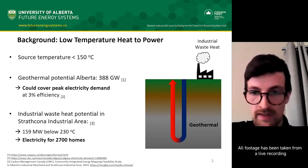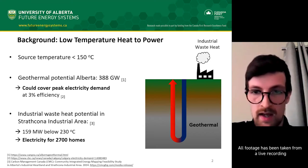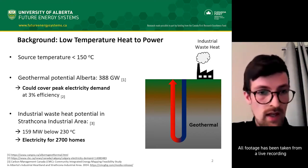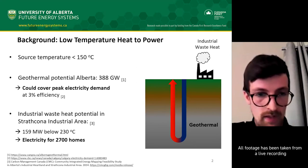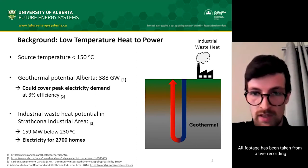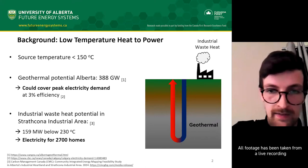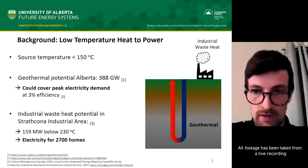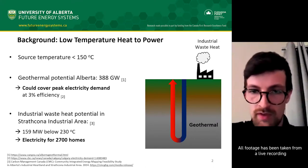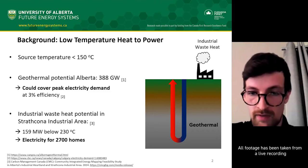For waste heat, the Strathcona industrial area has an estimated waste heat potential in the hundreds of megawatts at temperatures below 230 degrees Celsius, that could be used to produce electricity for about 2,700 homes in the area. So we can see that low temperature heat exists in significant quantities all around us. However, this renewable resource is hardly being used because of its low temperature, which makes it difficult to turn heat into power effectively.